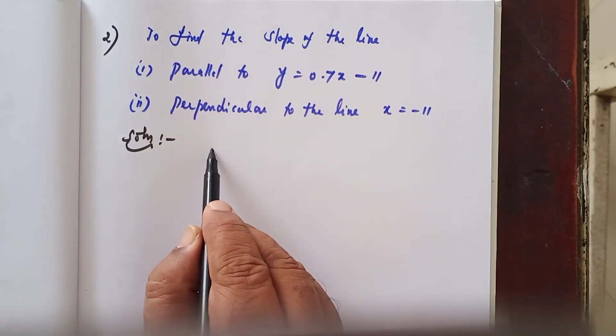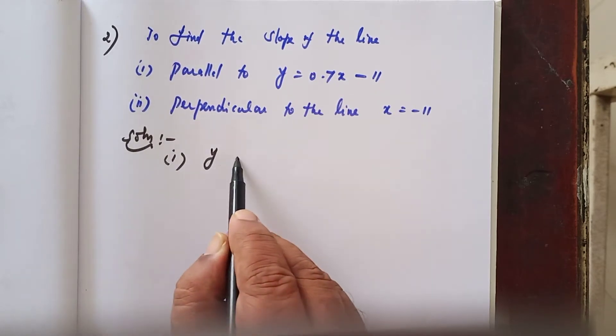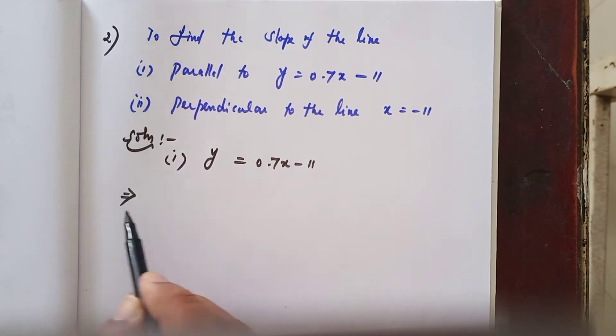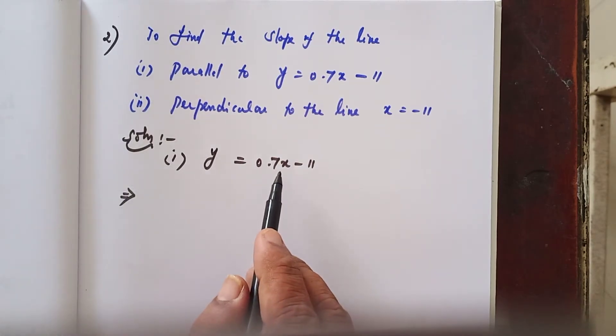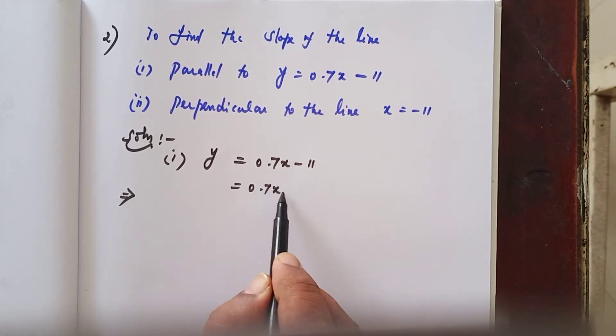Question number 2, subdivision 1: y equals 0.7x minus 11. First, I write this equation in the standard form. First x term 0.7x, since it is a positive coefficient, let it be in the right hand side.